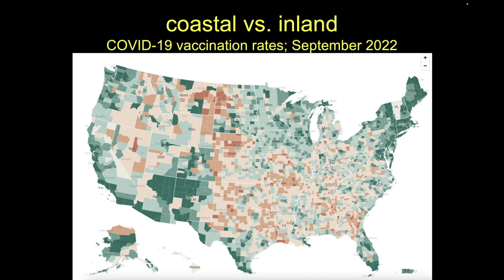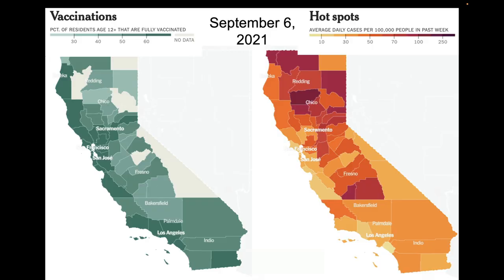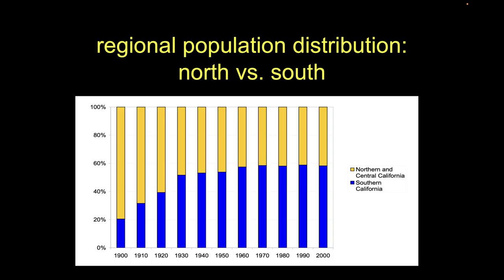Same with housing and COVID vaccination rates. And this isn't just a California phenomenon — it's an anywhere phenomenon kind of thing. Where are the most testing labs? Where is the highest social distancing? There are all these things — clear differences in terms of everything: vaccination rates, it goes on and on. There are clear differences in terms of coastal versus inland behavior.